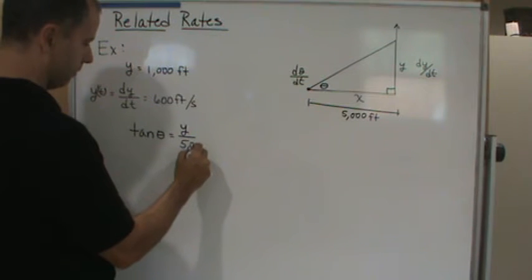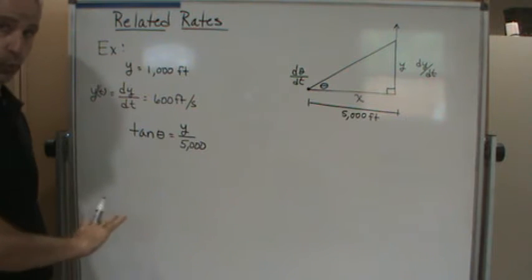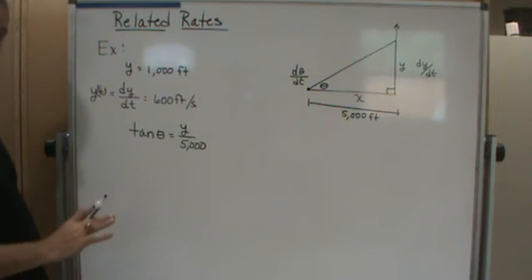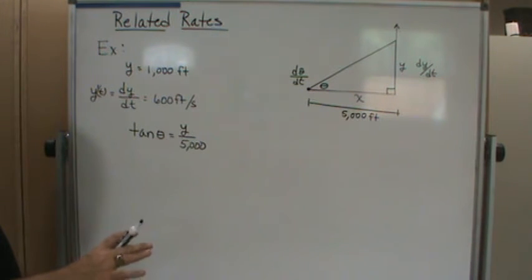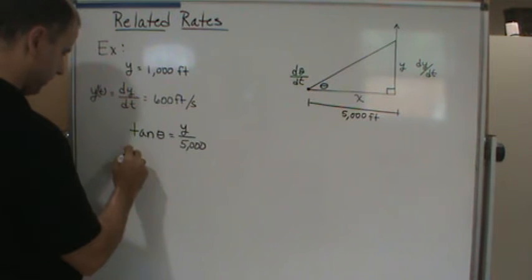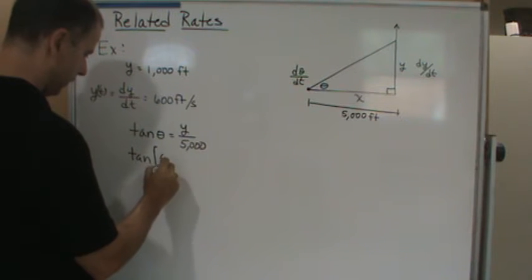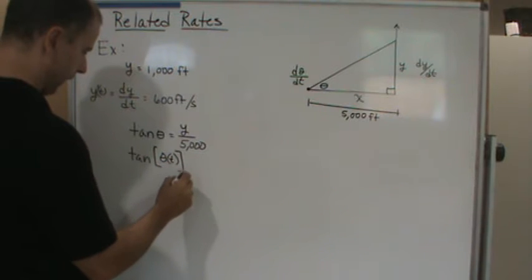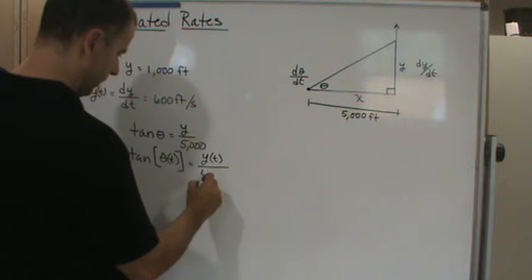Since x is not changing, x is constant, so we substitute x = 5,000. The two variables y and θ are still changing, so we do not substitute them yet — that would be a mistake. We write this as a function of t: tan(θ(t)) = y(t)/5000.